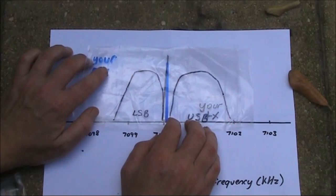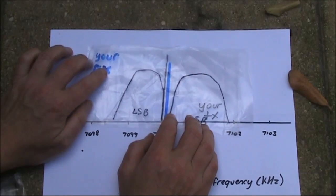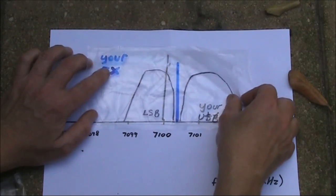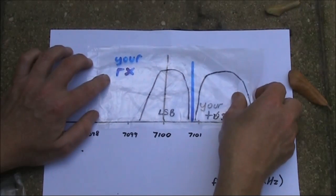If they were very slightly off, then you might just hear something. But otherwise, you need to be offset by around 800 Hz.